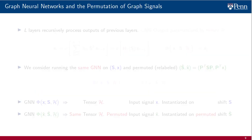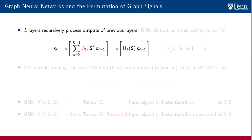We consider GNNs with single features. The extension of the analysis to multiple features is straightforward. Start by recalling the definition of a GNN with L layers. This is an architecture that consists of L layers that recursively process outputs from previous layers. Each layer is made up of a perceptron, which is the composition of a point-wise nonlinearity with a graph filter with coefficients hk. The output of the GNN is the output of layer L. It is a function of the input signal, the shift operator, and the filter tensor calligraphic h, which groups all of the filter coefficients used at each layer.